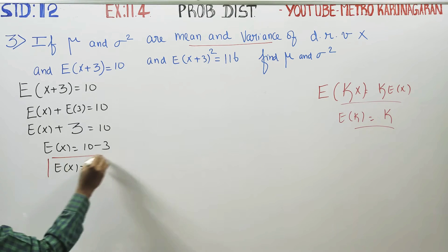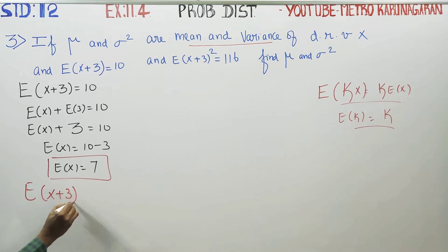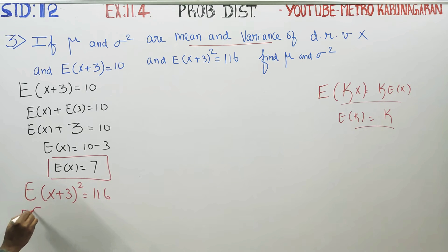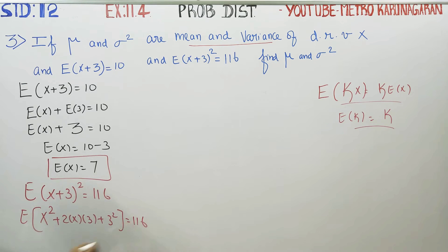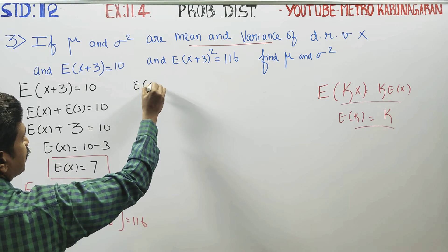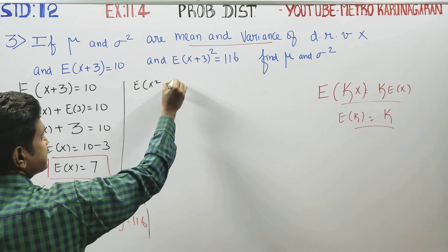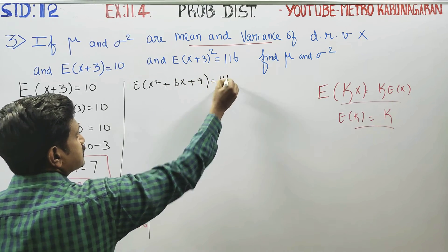From the second clue, expectation of (X + 3) whole square is equal to 116. Expanding using (a + b)² = a² + 2ab + b², this becomes expectation of X² + 6X + 9 equals 116.